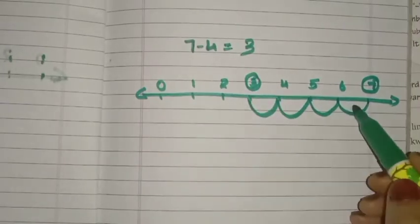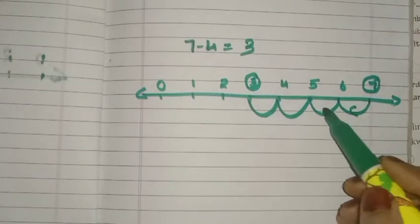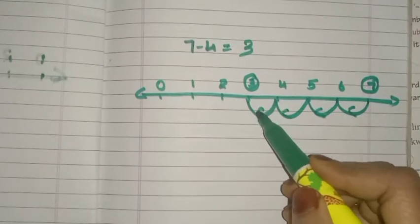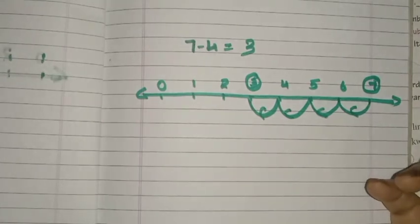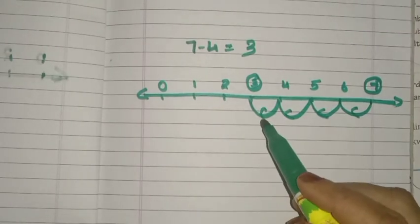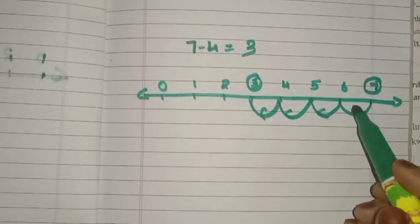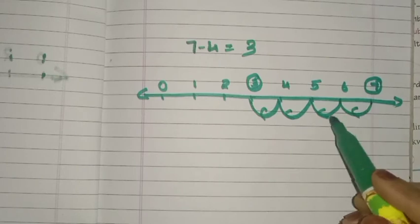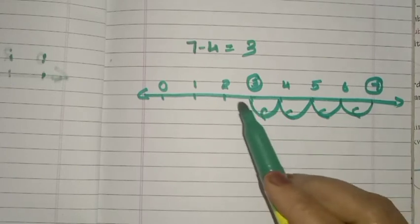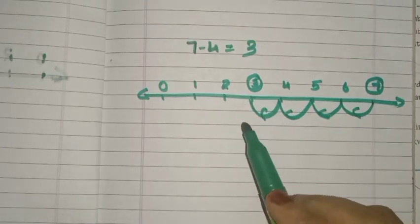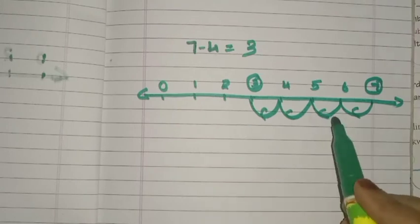Remember: when you are subtracting using a number line, you jump backward. When you are adding using a number line, you jump forward.